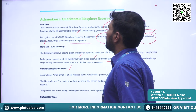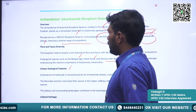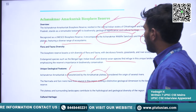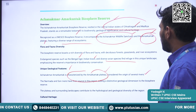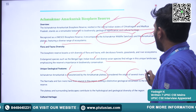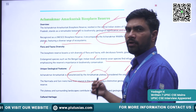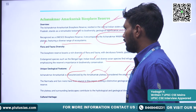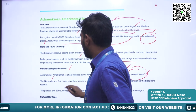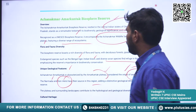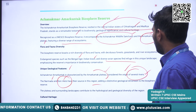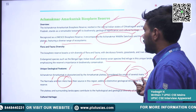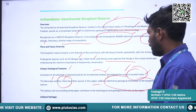When we see the geological features, it is characterized by the Achanakmar-Amarkantak Plateau, considered the origin of several rivers. Many rivers originate from here — rivers like the Narmada and Son emerge from this region, adding to the distinctive geological nature of this particular Biosphere Reserve.